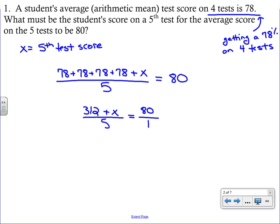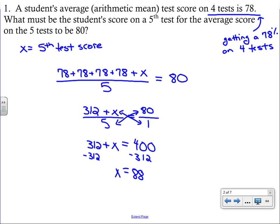We've been working on proportions, so to make this look like a proportion, I'll put a 1 under the 80. We solve proportions by cross multiplying: 312 plus x times 1 gives us 312 plus x, and 5 times 80 gives us 400. We're left with a simple one-step equation. To isolate x, subtract 312 from both sides and we get 88. So if the student wants an overall test average of 80, the fifth test must be an 88.